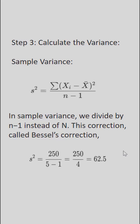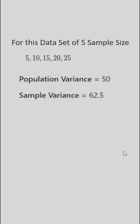Sample variance is similar, but here 250 must be divided by n minus 1, which is called the degree of freedom. We do this because of Bessel's correction. So 250 divided by 4 is 62.5. For a data set of five samples, population variance is 50 and sample variance is 62.5.